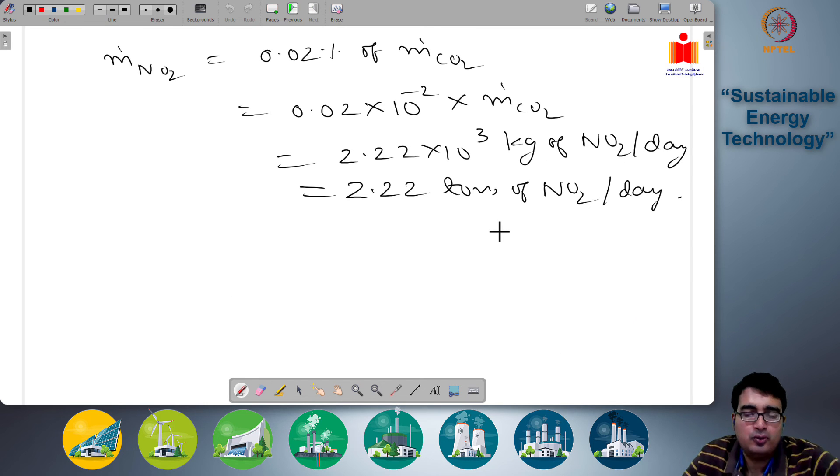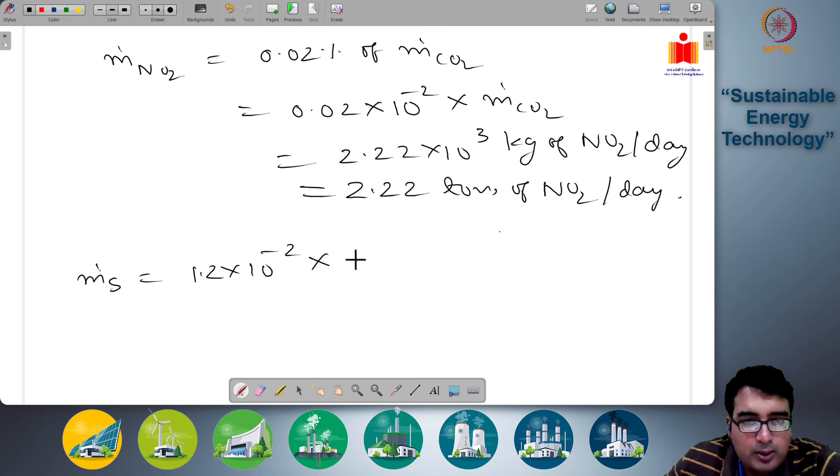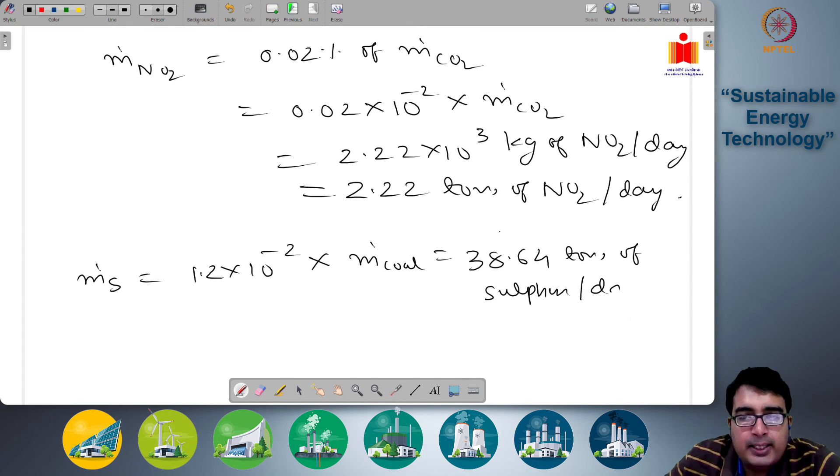So m dot S is 1.2 × 10^-2 times m dot coal. Again you can calculate this directly to get 38.64 tons of sulphur per day.